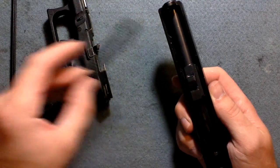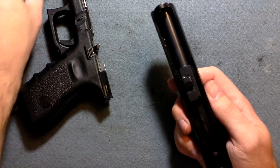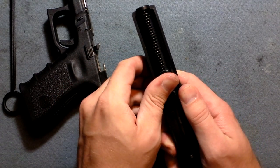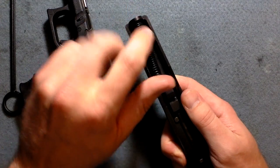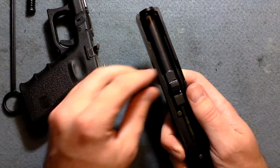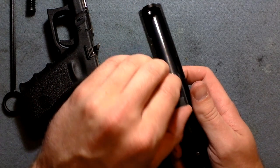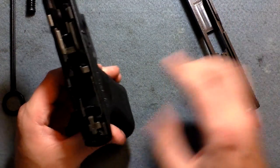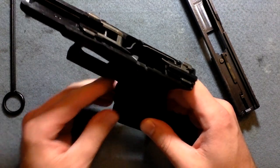Then you want to take your recoil spring out by pushing forward. Push forward and lift up. Then you can push your barrel out. And you have disassembled your Glock 19.